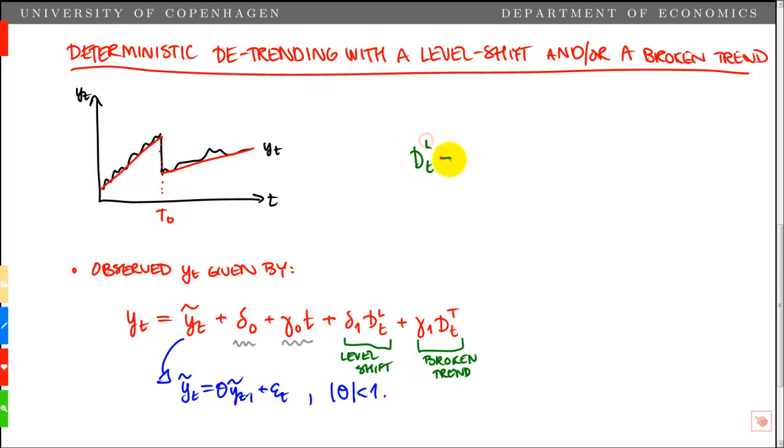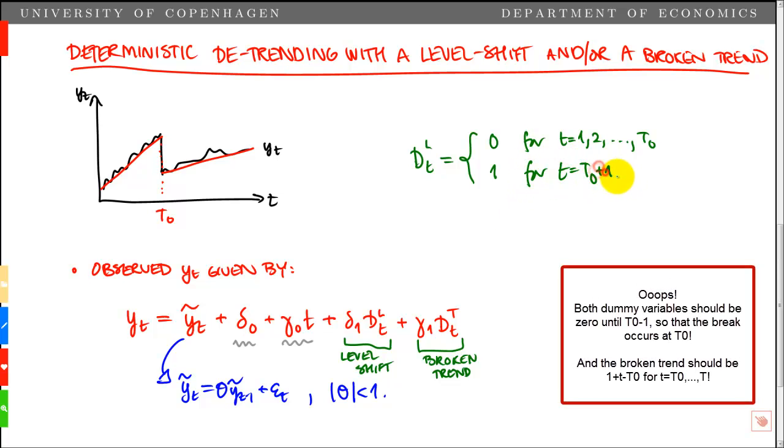dTL is what we call a shift dummy, so it takes on values 0 for t equal 1, 2, all the way up to t0, and then it jumps to 1 for t equal t0 plus 1, all the way up to the end of the sample.